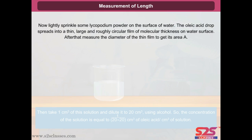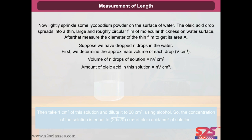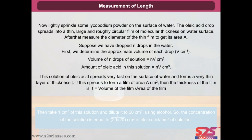Lightly sprinkle some lycopodium powder on the surface of water. The oleic acid drop spreads into a thin, large, and roughly circular film of molecular thickness on the water surface. Measure the diameter of the thin film to get its area A. Suppose we have dropped N drops in the water; we determine the approximate volume of each drop V cm³. Volume of N drops of solution equals NV cm³, and the amount of oleic acid in this solution equals NV cm³. This spreads on the water surface as a very thin layer of thickness T. If it forms a film of area A cm², then T equals volume divided by area, that is, T equals NV/A centimeters.